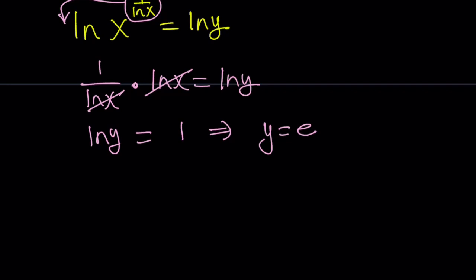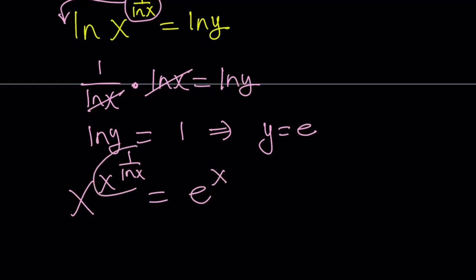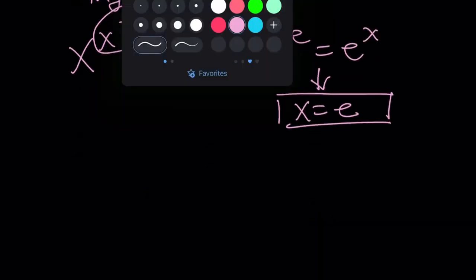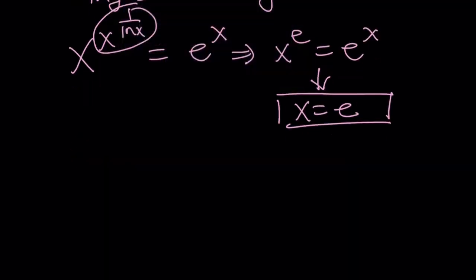Let's plug it back in. We had x to the power x to the power 1 over ln x equals e to the x. We replace that inner exponent with e — since y equals e — giving us x to the e equals e to the x. We've also done this before, but the answer is simply x equals e, because e to the power e equals e to the power e. Makes sense!